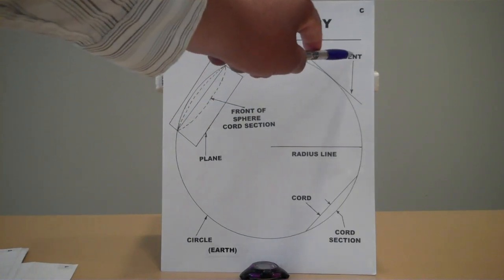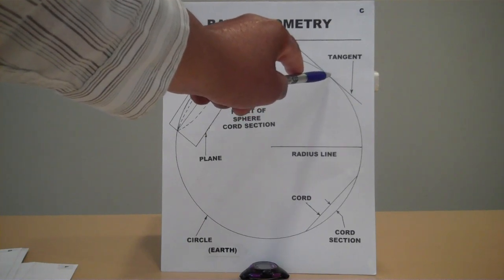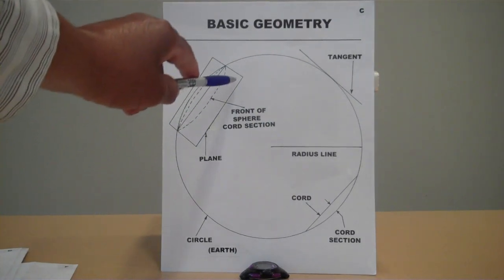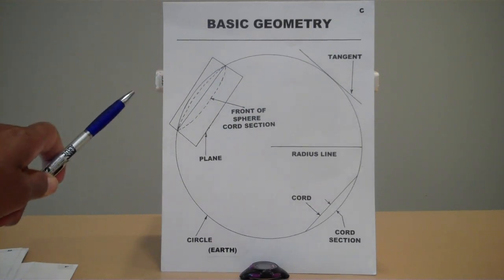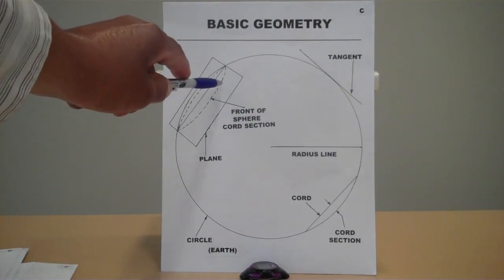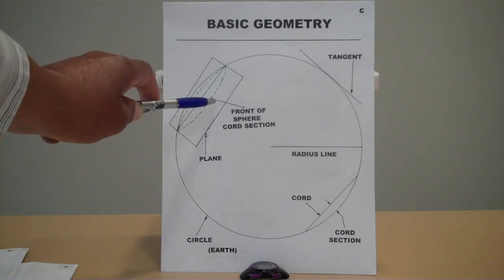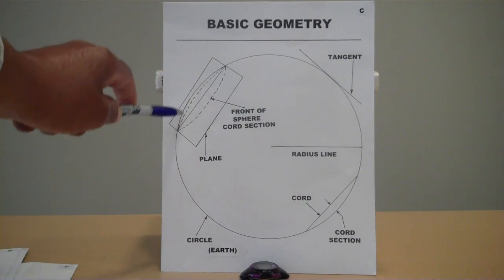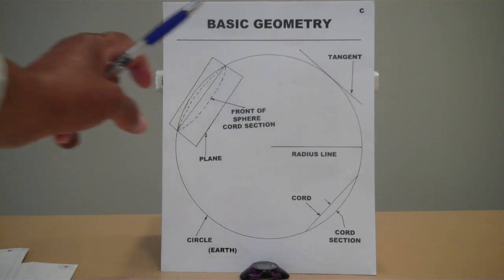This here is called a tangent line. A tangent is a straight line which touches the circle at one point and one point only. This here is called a plane. A plane in geometry is a two-dimensional object because it has width and length, but no thickness. When a plane passes through a sphere, a projection of the sphere is outlined by dotted lines. When you pass a sphere through the chord line, you will see the front of the sphere — the chord section becomes a three-dimensional chord section.